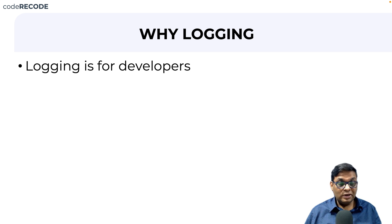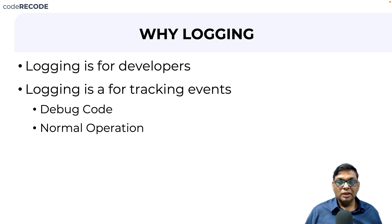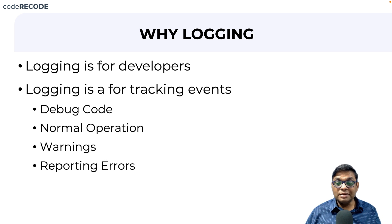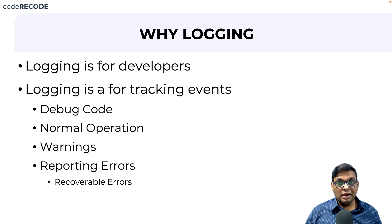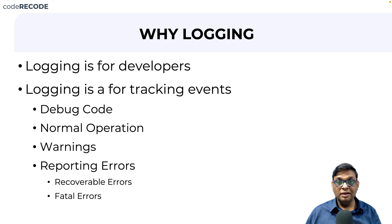Logging is for developers, not end users. The main purpose of logging is tracking events — debugging code, normal operations, warnings, and reporting errors. Errors can be of two types: recoverable errors, where something can be done but they still need to be reported and the program can move on; and fatal errors that cannot be recovered from and the program has to terminate. In Scrapy or web scraping, if the internet connection is not available, that is a fatal error and you have to terminate your spider.